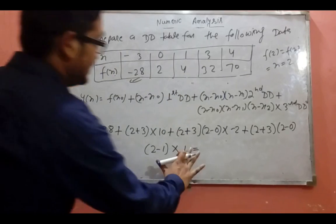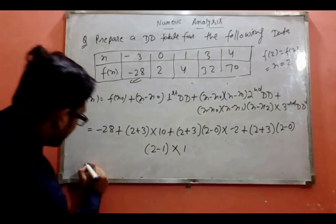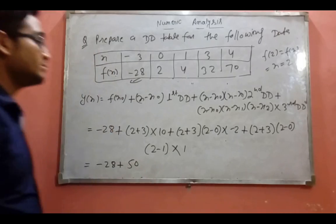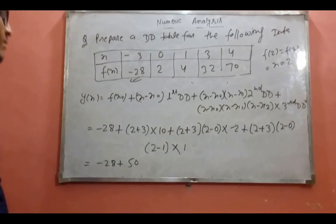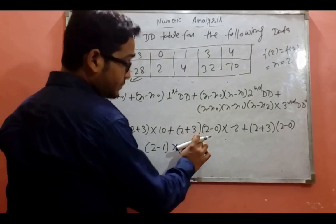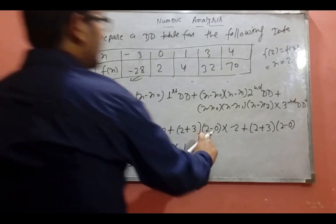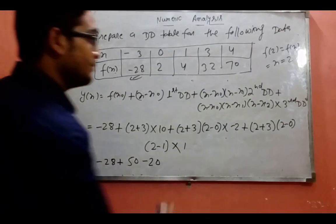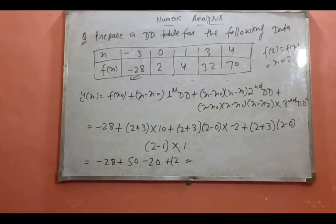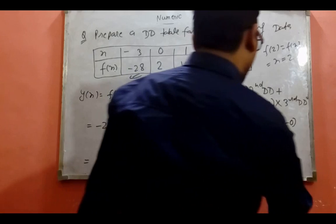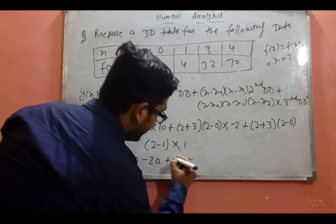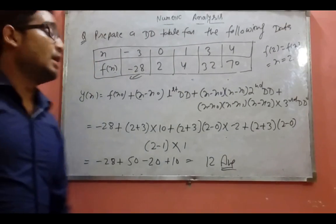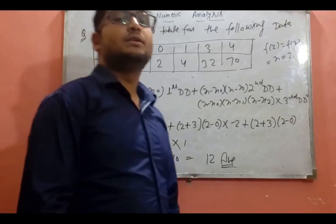Now we have to calculate this. Starting with -28, plus (x+3) into 10, plus (x+3)(x-0) into 2, minus 20, plus 12. And our answer is 2 plus 3 into 2, which gives 10, and our final answer is 12. Thanks friends — if you liked the video, please subscribe. Thank you.